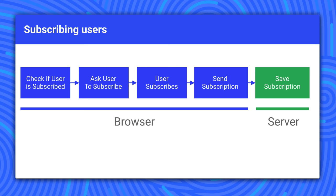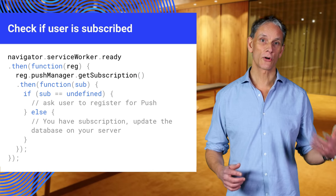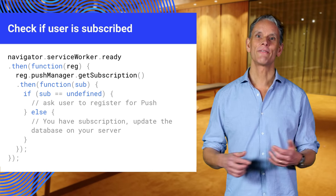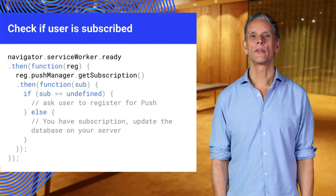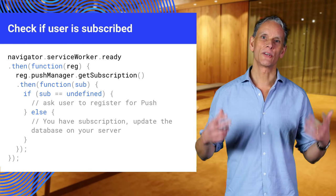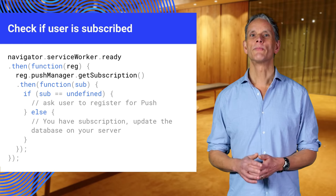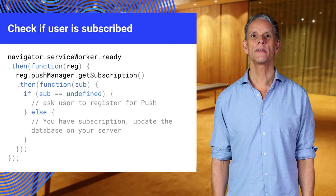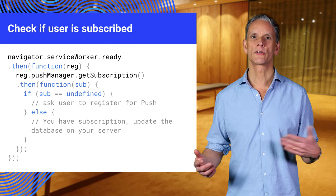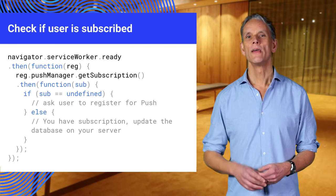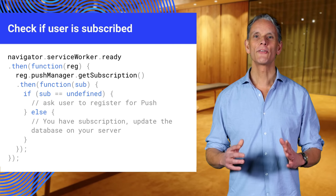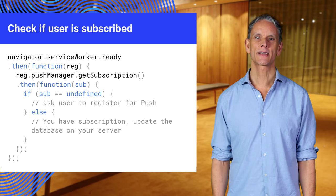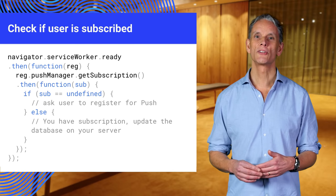When the user grants permission for push on your site, you subscribe them to the browser's push service. This creates a subscription object that contains the endpoint URL for the push service — different for each browser — along with a public key. We send the subscription object to the server and save it. Before subscribing a user, check if you already have a subscription object. If not, update the UI to prompt the user to enable push notifications. If you do, update your server database with the latest subscription object. The ready property of the service worker returns a promise which resolves to a service worker registration object when the service worker becomes active. The getSubscription function returns the subscription object or undefined if it doesn't exist. We need to perform this check every time the user accesses our app, because subscription objects can change during their lifetime.